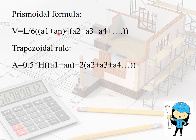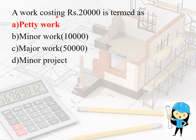Work costing ₹20,000 is termed as a petty work. If the work costs ₹10,000 it is called minor work. If it is above ₹50,000, it is called major work.